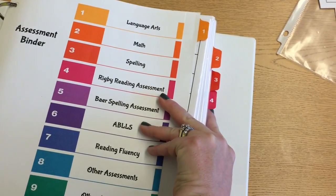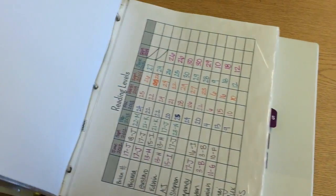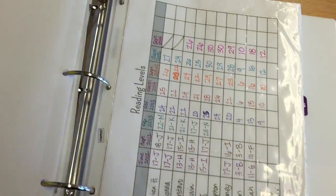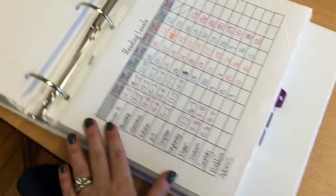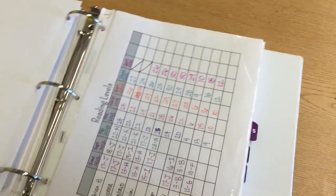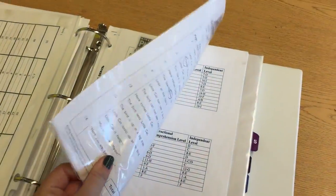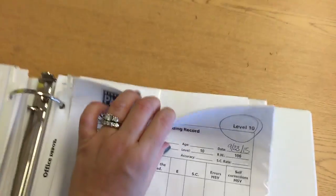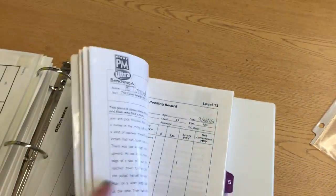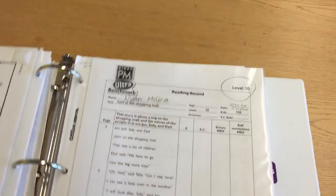Next I have my Rigby reading. We use Fountas and Pinnell for our guided reading levels. I have all of the students' names, and every three months when I assess their reading level, I record what their score is. And then, same thing with these page protectors — all of their old reading assessments are right in here. So instead of having to flip through all of these different reading assessments, I can just flip through each student and find their exact section.